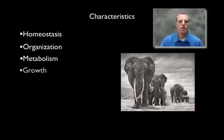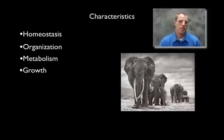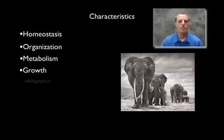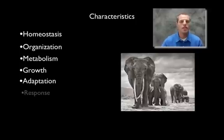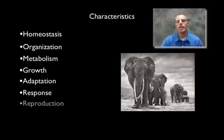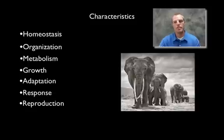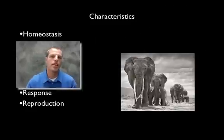You also have to be able to grow — obviously some of us have grown more than others, but growth has to be involved to be a living thing. Adaptation: as we learned with Darwin and natural selection, if you don't adapt to your environment, it's going to be very difficult to survive long as a living thing. Response: you have to be able to respond to a stimulus. And the final one is reproduction — reproducing is what makes you a living thing.